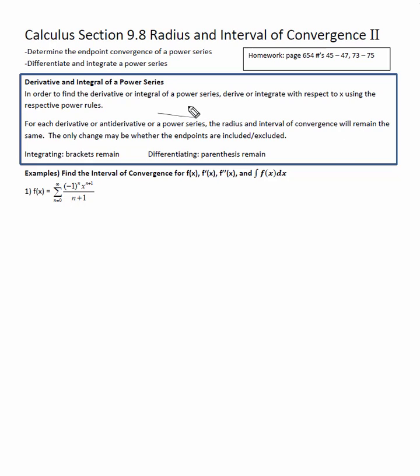Here are some rules for that. In order to find the derivative or integral of a power series, you can derive or integrate with respect to x using the respective power rules. For each derivative and antiderivative of a power series, the radius and interval of convergence will remain the same — meaning that for every derivative and for every integral of f, the values of the interval, whether it's negative two to two or negative three to negative one, are going to be the same.